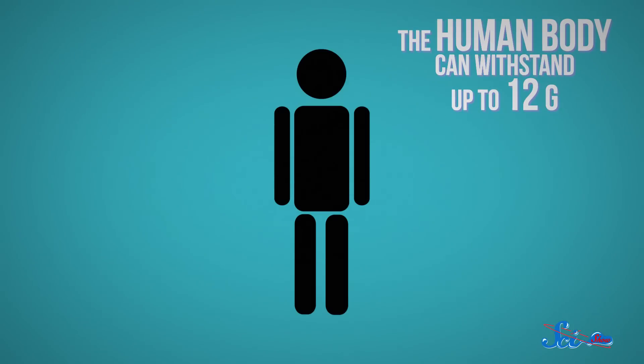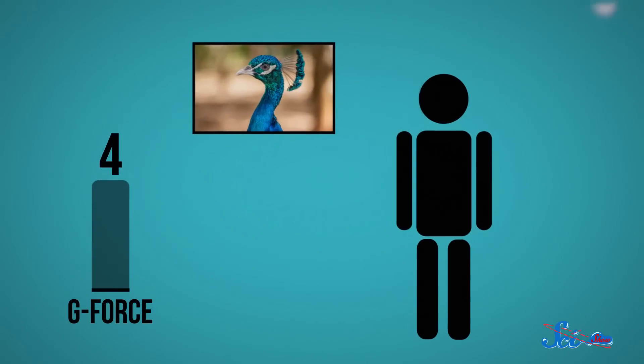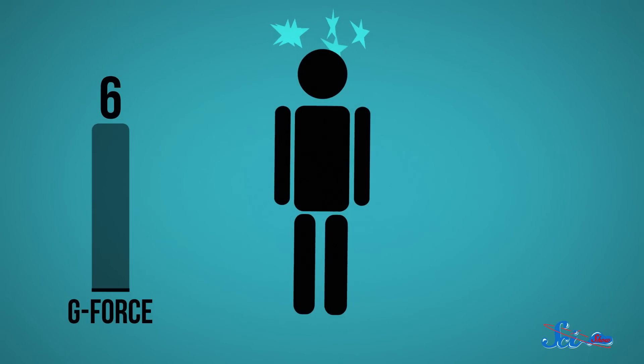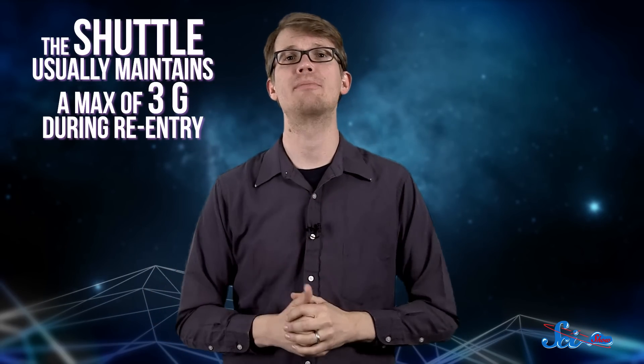The human body can withstand a maximum of about 12 gs. But after just about 4 gs, your vision starts to blur, and beyond 5 gs, you're just moments away from passing out. So the shuttle usually maintains a max of around 3 gs during reentry.